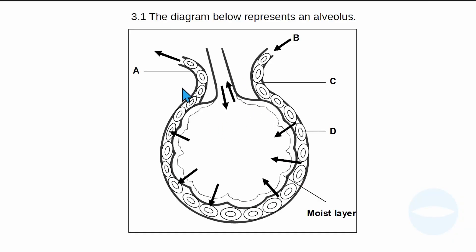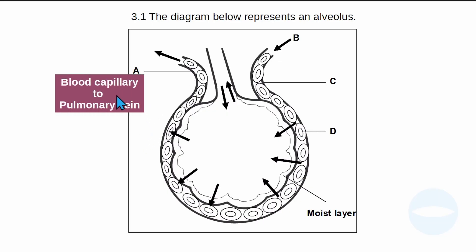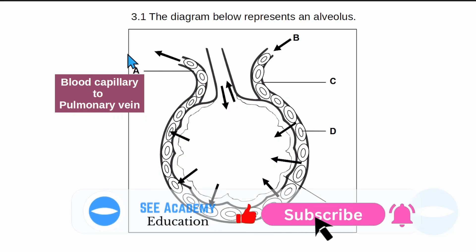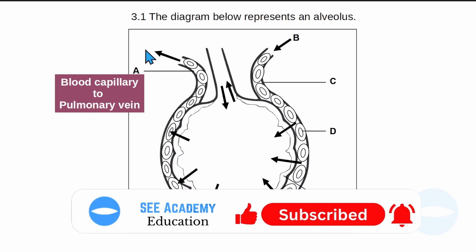Here is the diagram and the statement. Before I show the questions, I will analyze this diagram so that it will be clear when I answer the question. The question says 3.1: the diagram below represents an alveolus, which is found inside the lungs. Label A is the blood vessel — a blood capillary connected to the pulmonary vein. It takes blood away from the alveolus, and this blood is oxygenated blood.